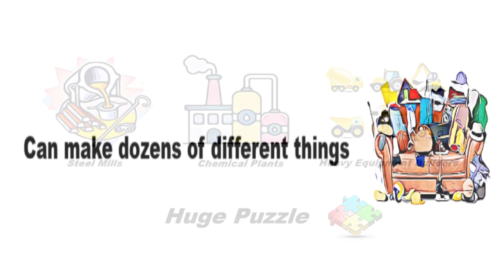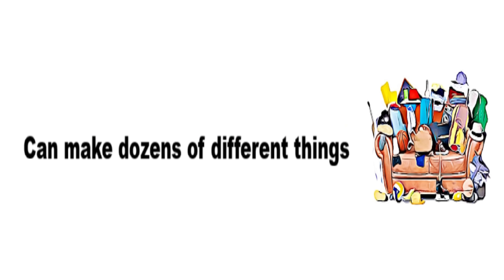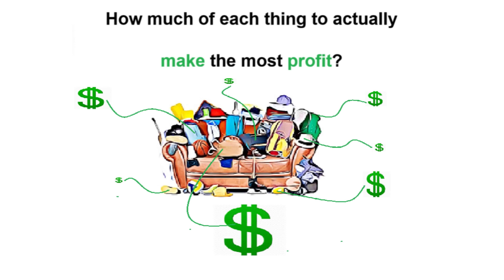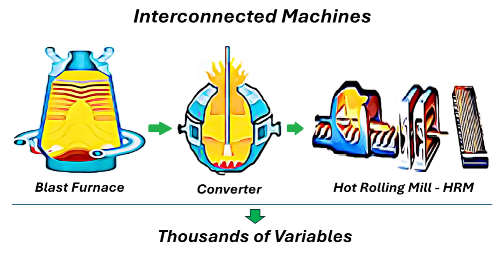I can make dozens of different things. But what should they make? And how much of each thing to actually make the most profit? It sounds almost too basic, but when you've got these massive interconnected machines — blast furnaces, converters, rolling mills — all running together, that simple question suddenly involves thousands of variables. It gets complicated fast.